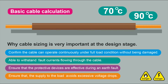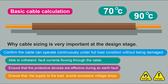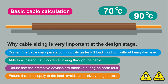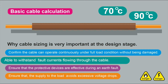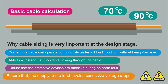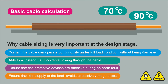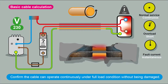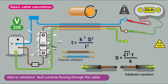When we've calculated the correct cable size, we can confirm that the cable can operate continuously under full load conditions without being damaged, that it can withstand fault currents, that protective devices are effective during earth faults, and that the supply avoids excessive voltage drops. We want to make sure the cable doesn't overheat and start to melt, passing thermal energy to its surroundings — the load, the building, the supply equipment — because it's a fire risk.